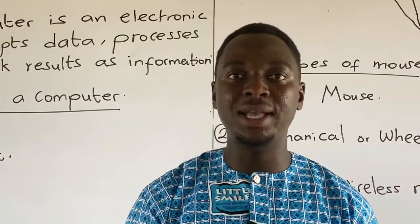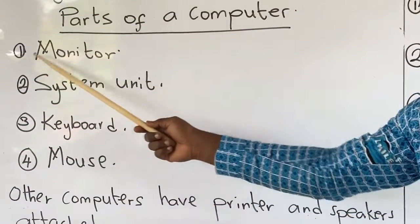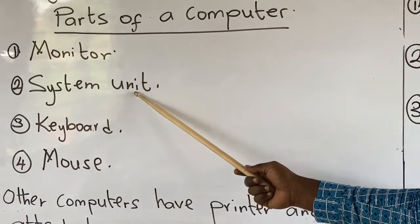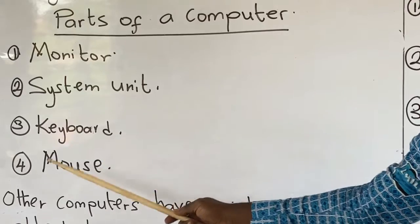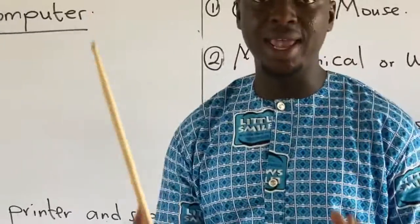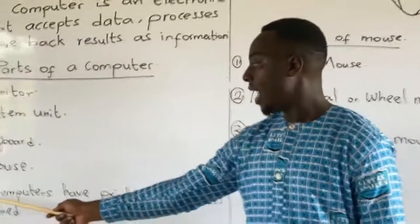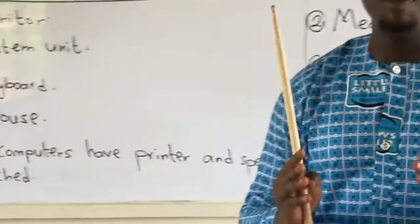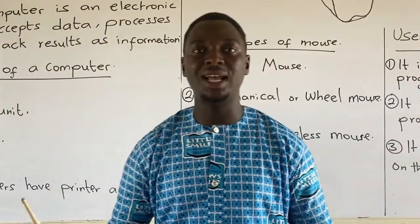A computer has four basic parts. One, we have the monitor. Two, the system unit. Three, the keyboard. And four, the mouse — the computer mouse — which will be our main topic for today. Let's also note that other computers have a printer and speakers attached to them.